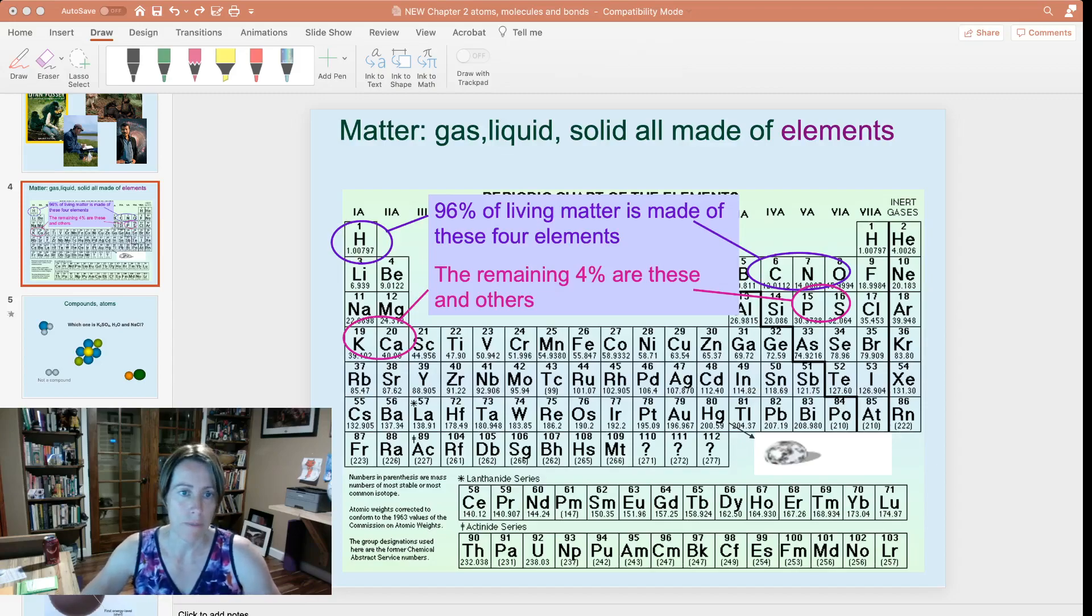These substances we call elements. You can see on here that instead of having to write out their whole name, because we're scientists and sometimes we don't like to write, we use abbreviations. So instead of writing out the whole name, we use a letter abbreviation, so C for carbon, for example, or Li for lithium.